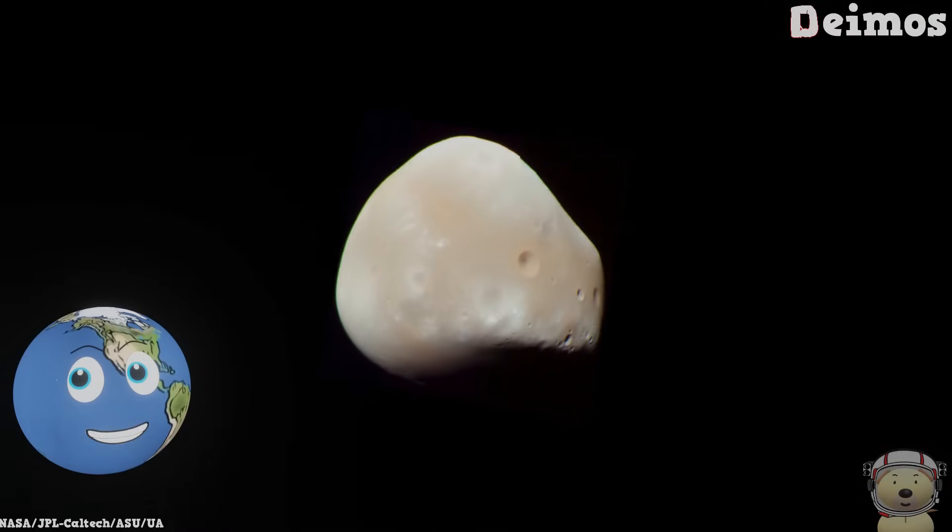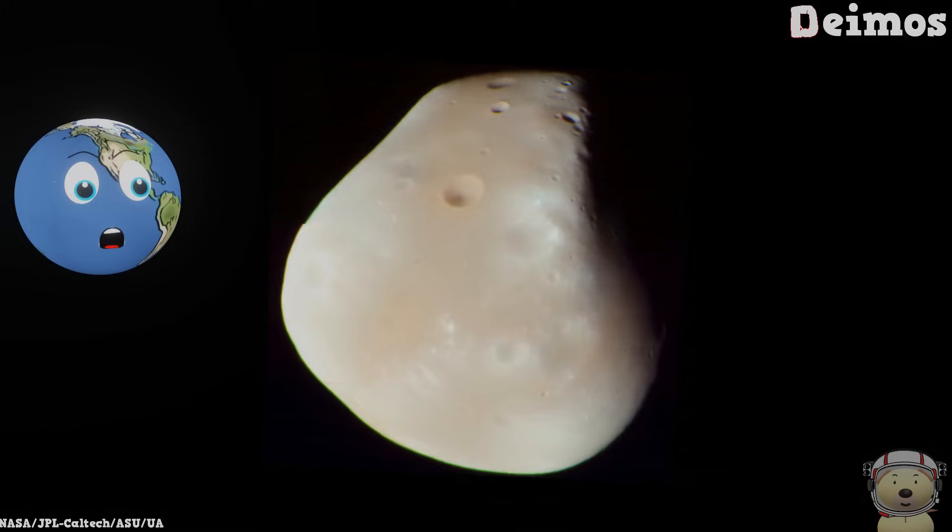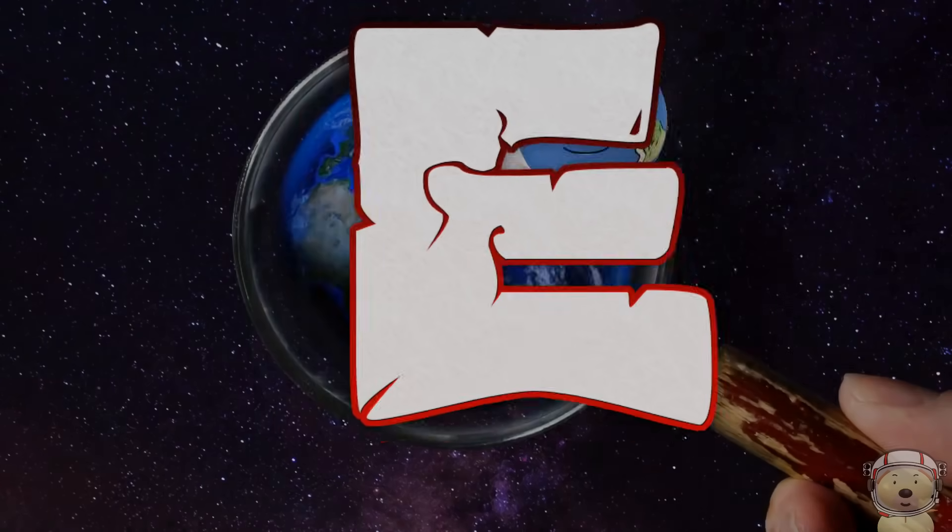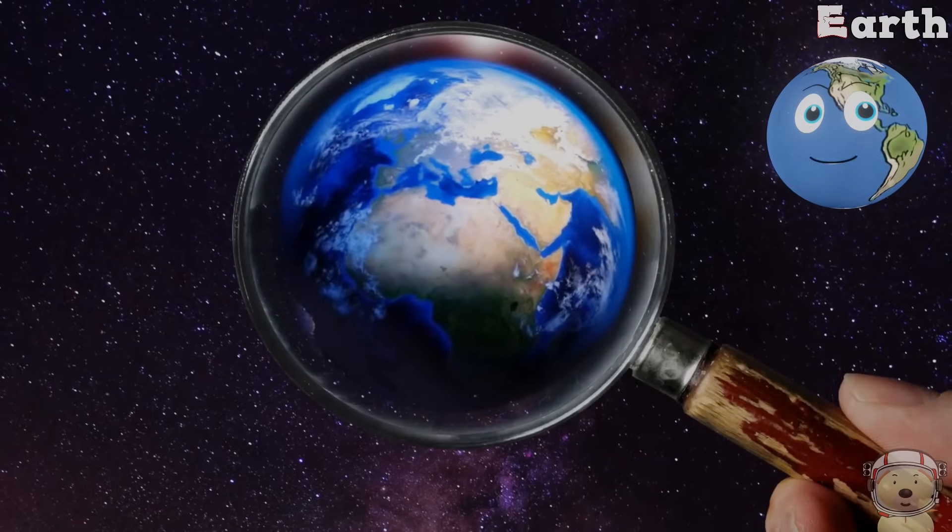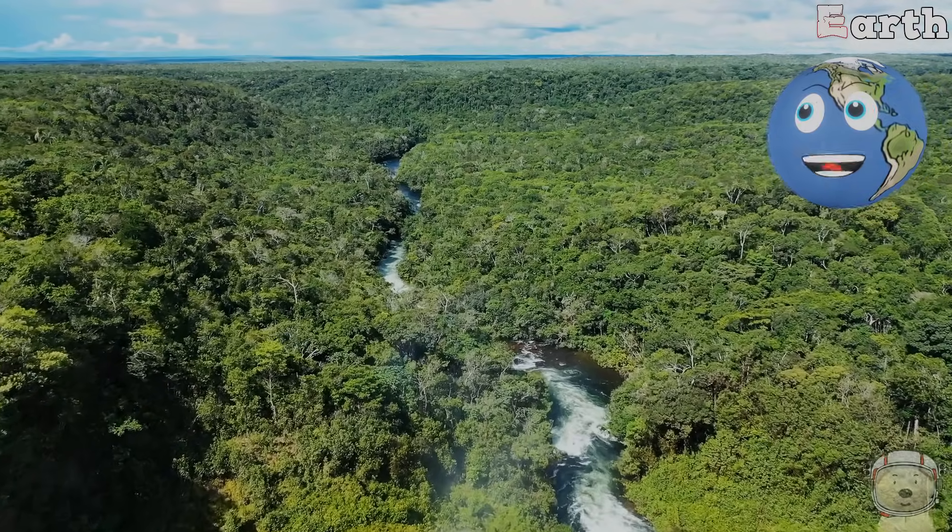D is for Deimos, Mars' moon that is odd, its shape is strange, named after a god. E is for Earth, you live on me, rivers and mountains and valleys you'll see.